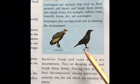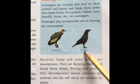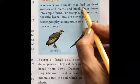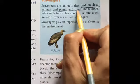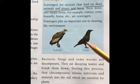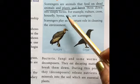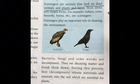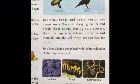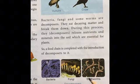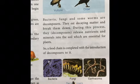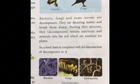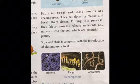One more category is scavengers — like vultures and crows. These are animals that feed on dead animals and plants and convert them into simpler form, so that fungi, bacteria, and other microorganisms can further break them down. This keeps our earth clean.